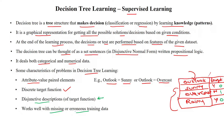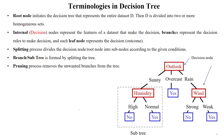The basic terminologies in a decision tree: the tree structure has a root node at the top, internal nodes in the middle, and the bottom nodes are called leaf nodes.